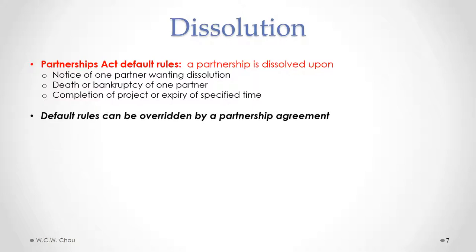These default rules can be overridden by a partnership agreement. Usually a partnership agreement would set out different rules for dissolution, because you don't want to give one partner the power to dissolve the whole partnership, and you don't want the death or bankruptcy of just one partner to trigger dissolution of the entire partnership.